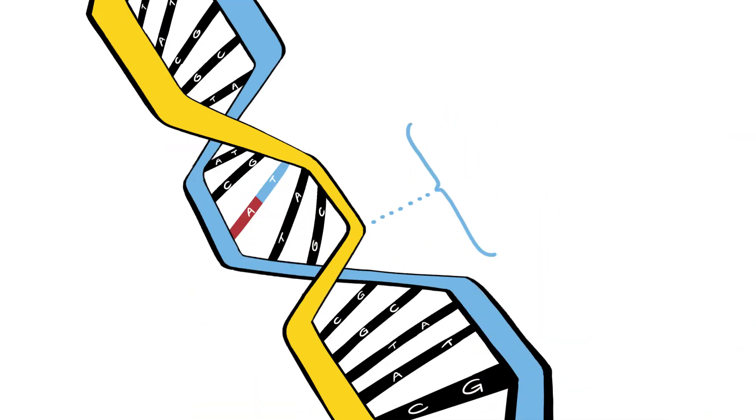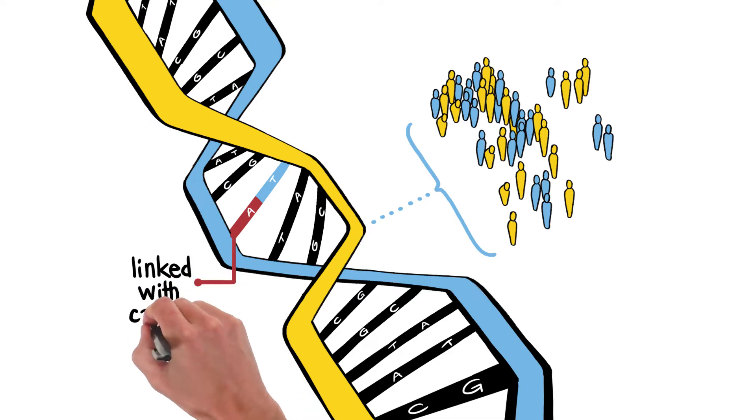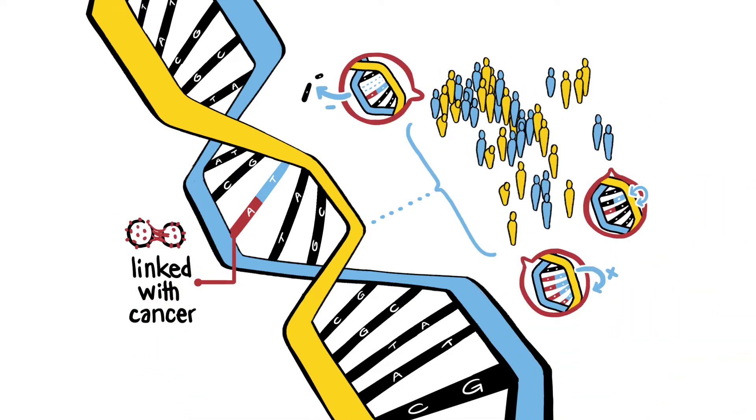When scientists look at a specific segment of the DNA in a large population of people, like a gene that can cause a specific type of cancer, they see a variety of ways that the gene is spelled from person to person. Each distinct spelling is called an allele.